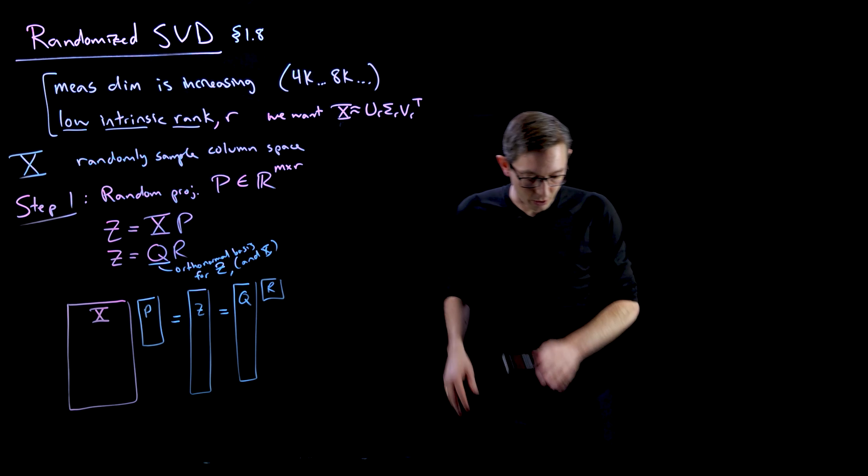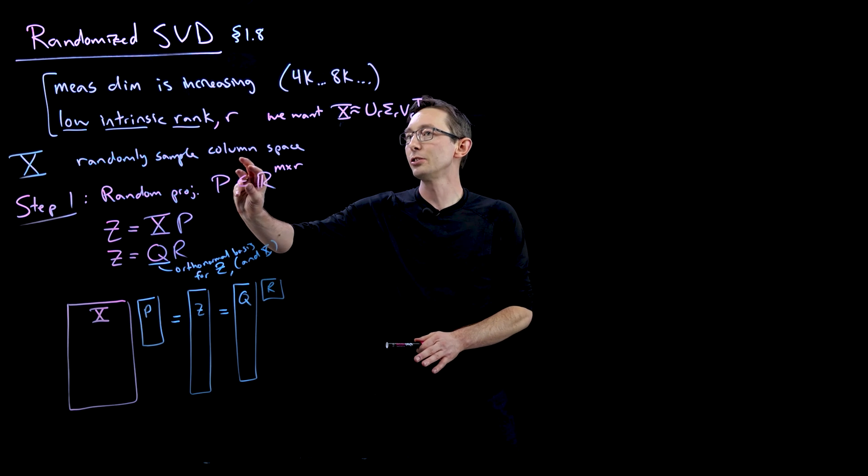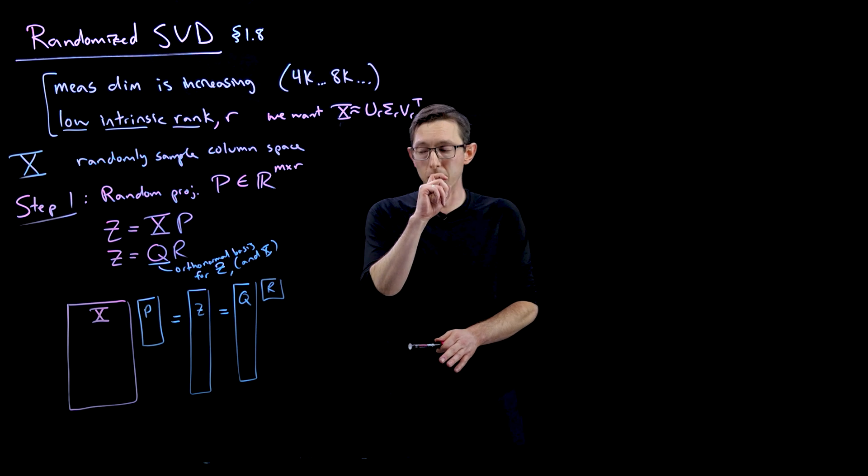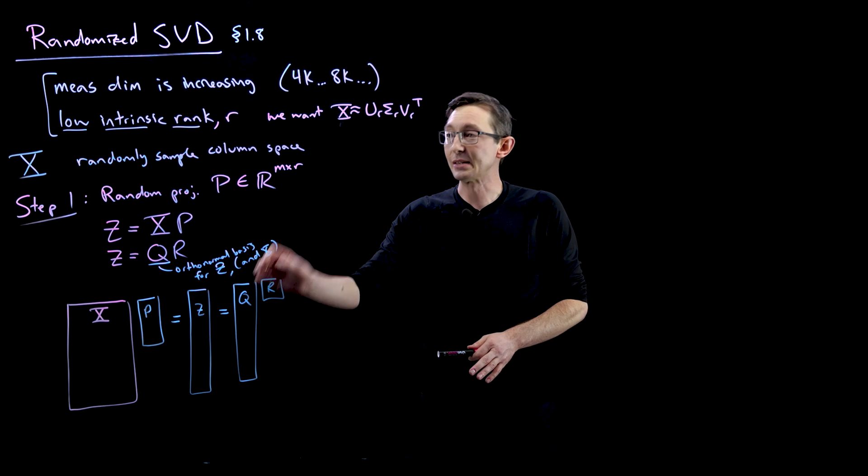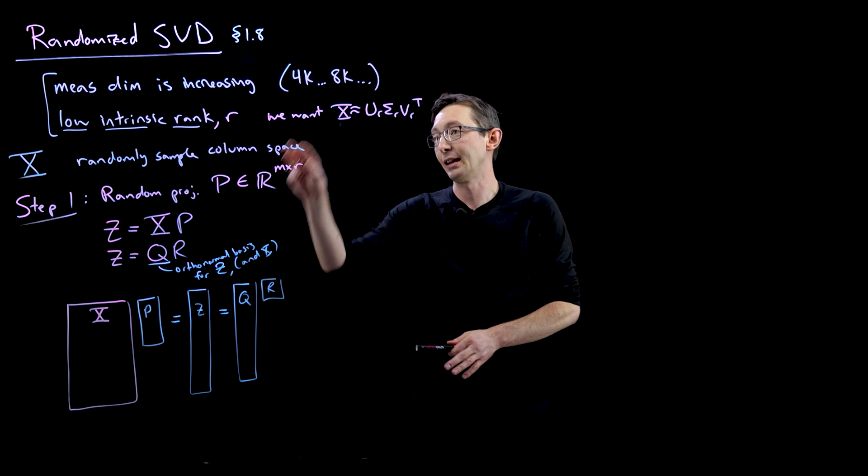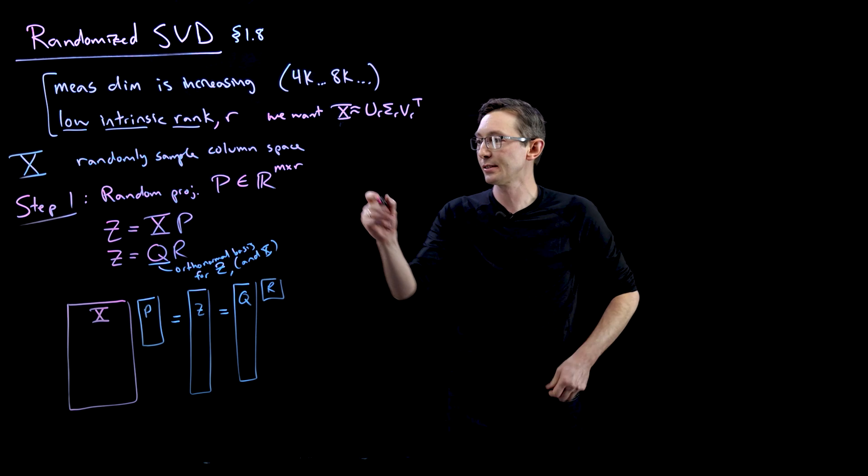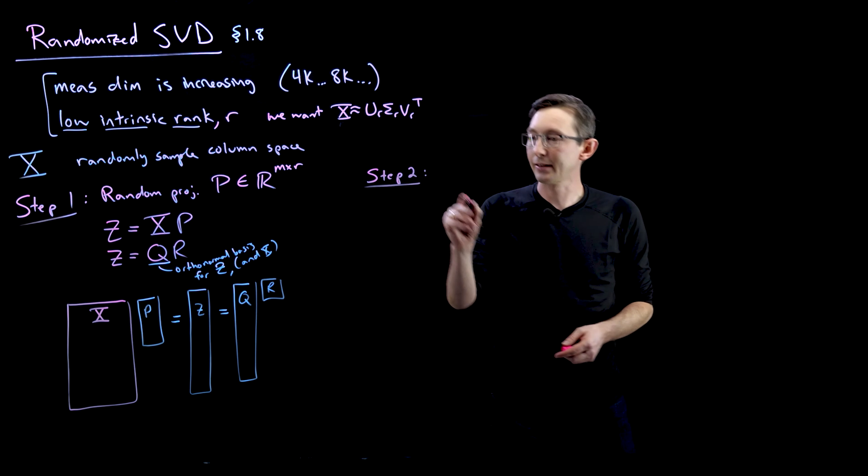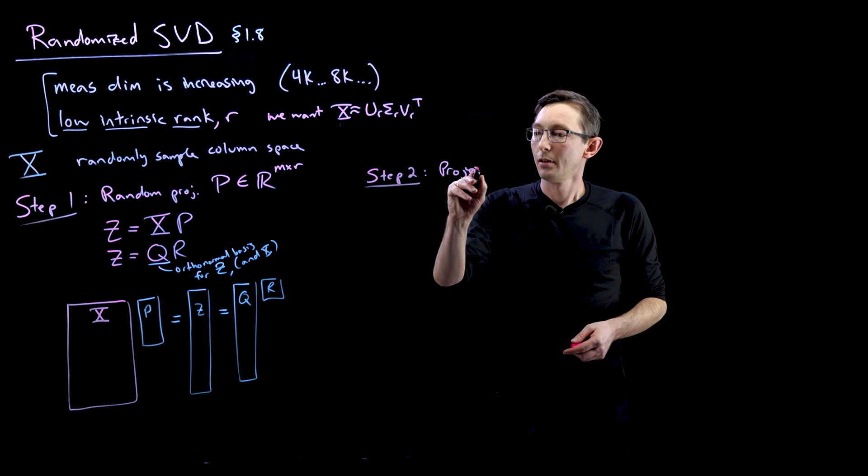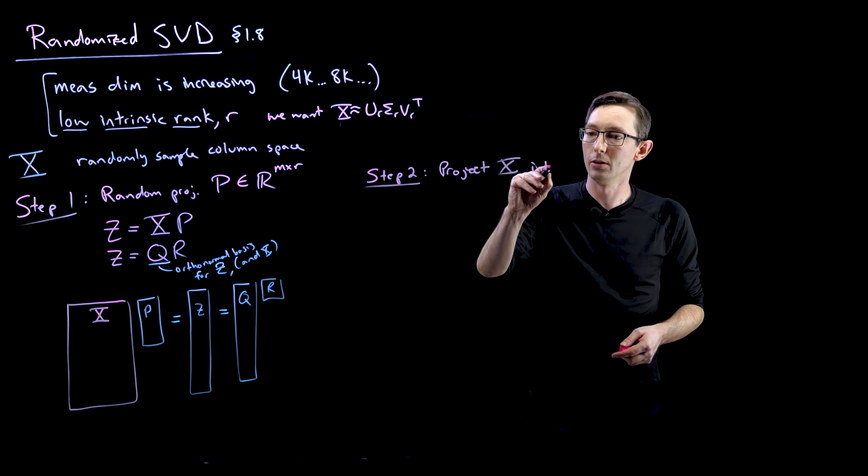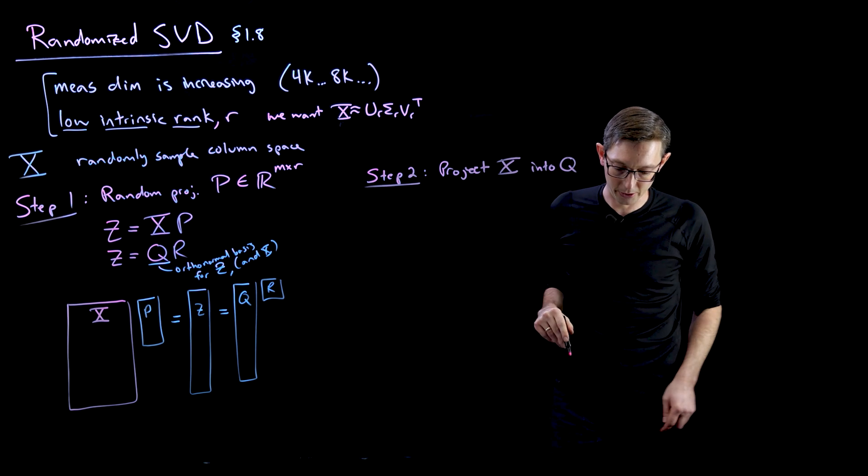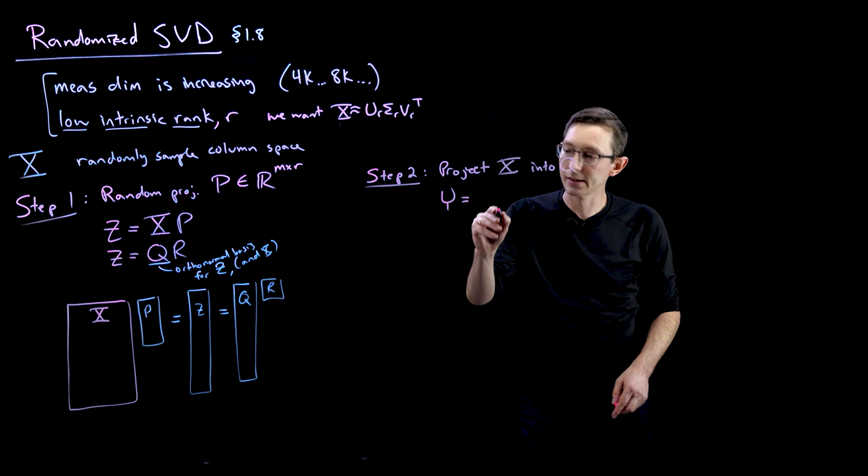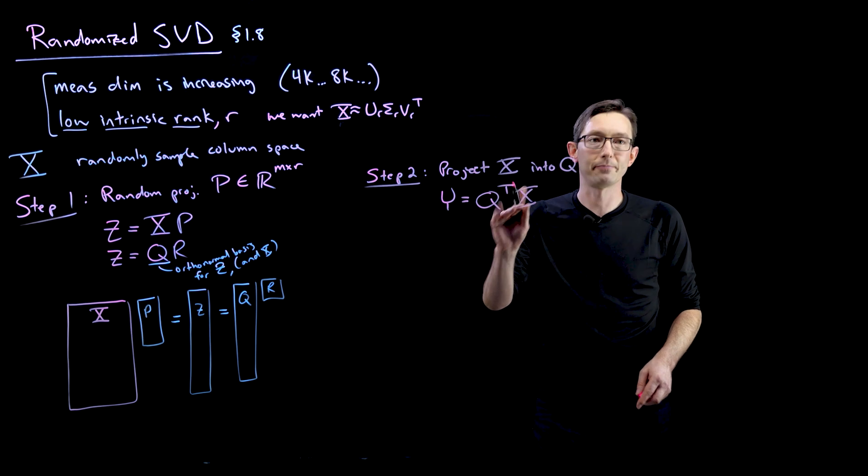Now step two, what we're going to do is we're now going to project our original data matrix X onto that subspace Q. Now that we have an orthogonal subspace for the column space of Z and X. We're going to project X into that low dimensional subspace. So now step two is we're going to project X into Q or onto Q, however you want to say it, down to the Q dimensional space. So we're going to get this Y equals Q transpose X.